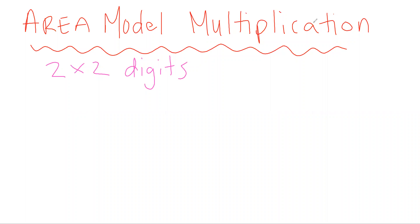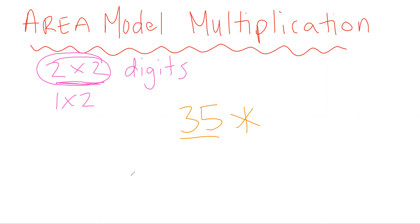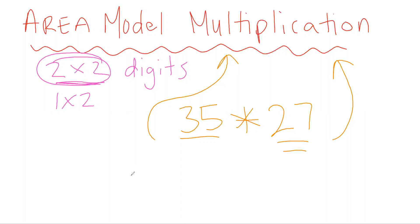We're moving along with the area model of multiplication. We've been talking about one-by-two-digit numbers, and today we're focusing on two-by-two-digit numbers. So what does that mean? If I have a two-digit number like 35 and I'm multiplying by another two-digit number like 27, how can we use the area model to plan that out? Let's do 35 times 27.